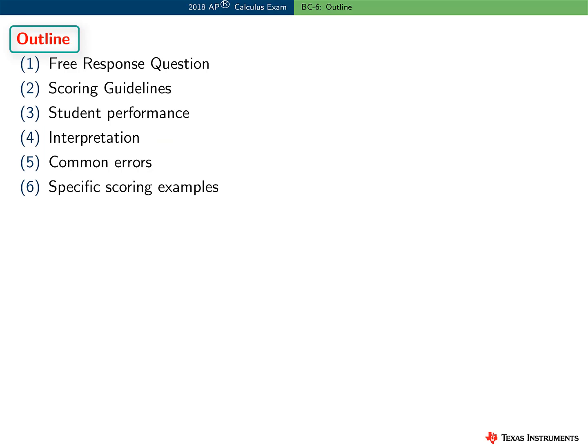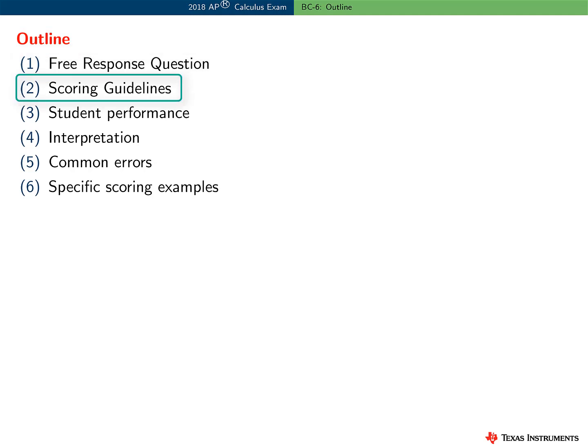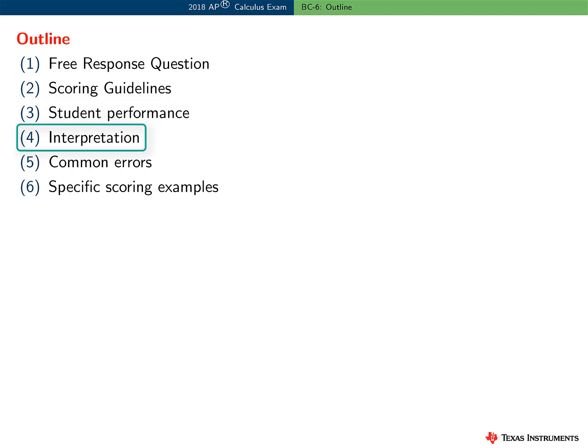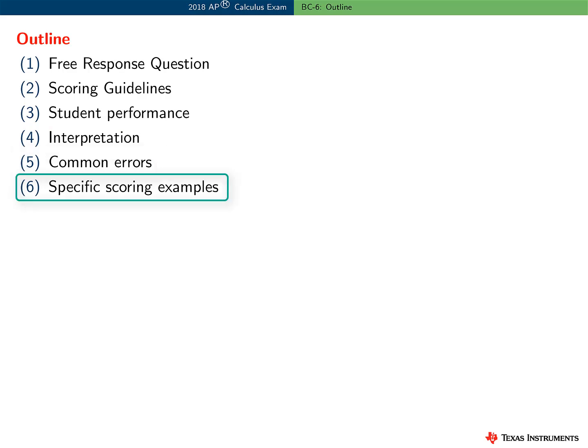Here is an outline of the information presented in this video. I'll start by reviewing the free response question and then the scoring guidelines used at the AP Calculus reading. I'll present a brief general summary of student performance on this question, and then I'll consider more detailed interpretations of the scoring guidelines and how these guidelines were applied in certain situations. I'll consider some common student errors where relevant, and where appropriate, I'll present some specific responses and the score for each.